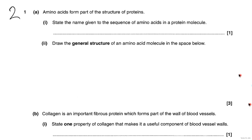Question number two is on proteins. The first question asks you to state the name given to the sequence of amino acids in a protein molecule — that's going to be the primary structure. There were a variety of other answers, none of them correct. It had to be the primary structure. Some people put alpha helix or beta pleated sheet — that's not correct.